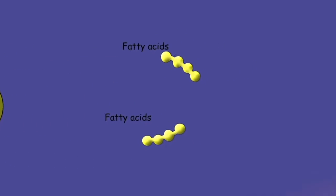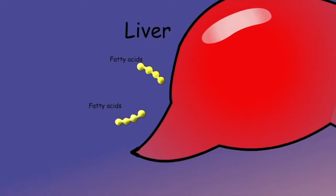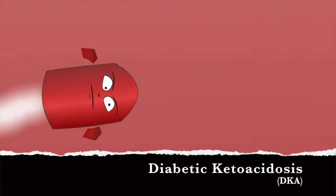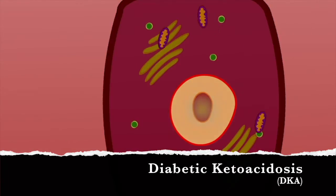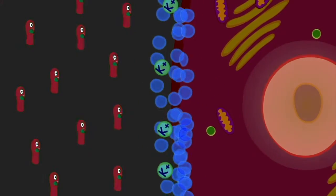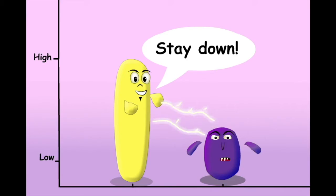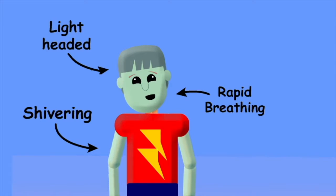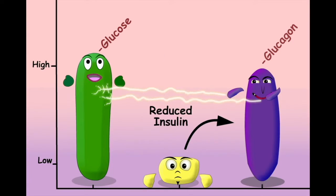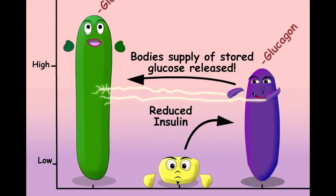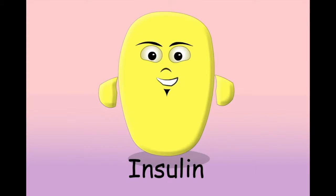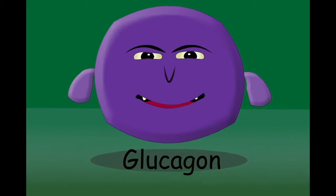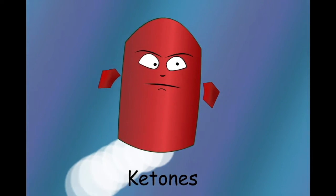In this video we're going to take a look at the pathophysiology that leads to diabetic ketoacidosis. To do this we're going to use some basic cartoons, not because I think you're children but because they're a useful way to produce some memorable visual images to help us get to grips with this topic. In this video we're going to talk about insulin, glucose, glucagon and ketones.